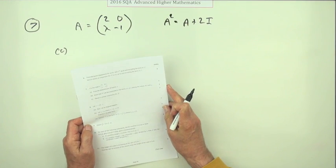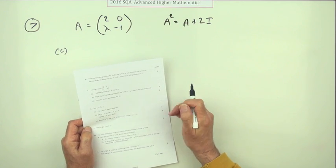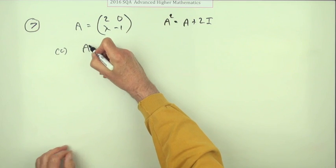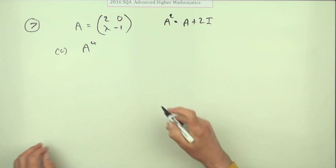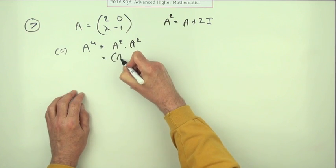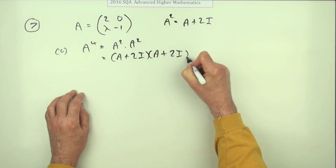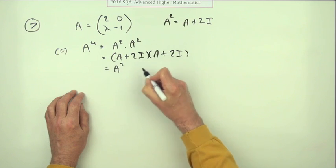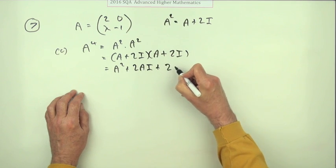Now for part (c): Obtain a similar expression for A to the power 4. That would be A squared times A squared, so that would be A plus 2I times A plus 2I, so it'd be A squared plus 2IA. Now strictly speaking that would be 2IA, but the identity commutes, plus 4I squared.